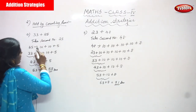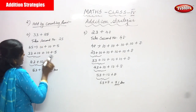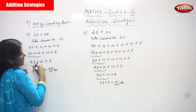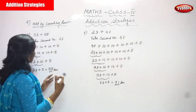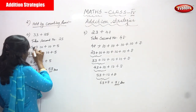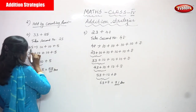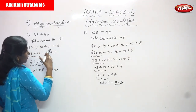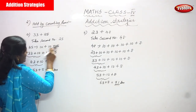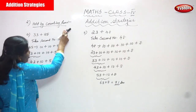33 plus 25: the first number is 33 and the second number is 25. I'm going to split the second number 25 by counting tens. So 25 means 10 plus 10 plus 5 — that is, 10 plus 10 is 20, and 20 plus 5 is 25.